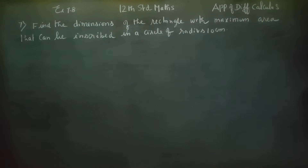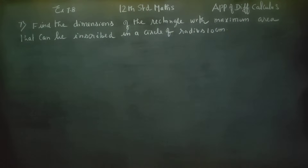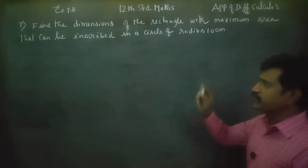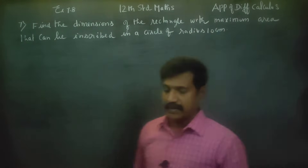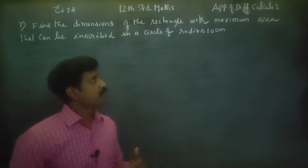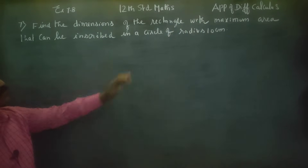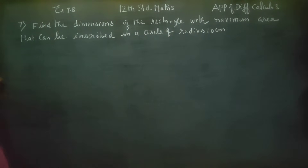Dear 12th standard students, I am Mitru Karnagaran. In exercise number 7.8, sum number 7: find the dimensions of the rectangle with maximum area that can be inscribed in a circle of radius 10 centimeters.